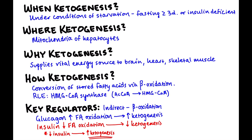Insulin naturally decreases fatty acid oxidation and therefore decreases ketogenesis. If a patient is insulin deficient, it does the reverse — it increases fatty acid oxidation, which increases ketogenesis. That's why diabetic patients are going to have high levels of ketones.